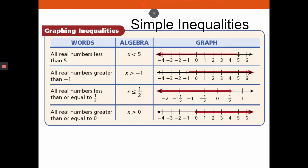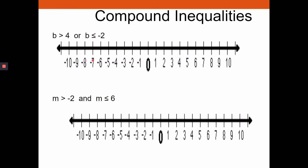Quick review of simple inequalities: if you have x less than five, all real numbers less than five — put an open circle on five and shade to the left. For all numbers less than or equal to one-half, put a closed, filled-in dot on one-half and shade to the left.